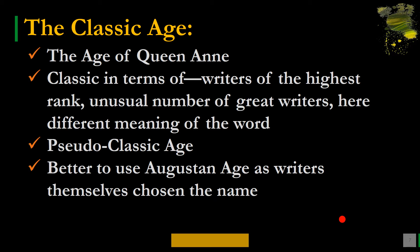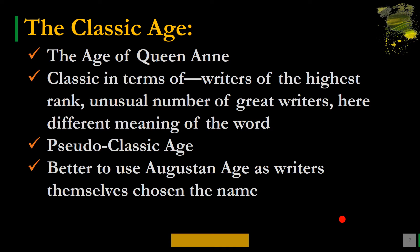There are three basic features of the Classic Age: first, writers of the highest rank; second, an unusual number of great writers flourishing in the period; and different forms emerge. For example, the Augustan Age in Roman literature is considered its Classical Age, and the reign of Louis XIV is considered the Classical Age of French literature. When we use the term 'Classical Age' for 18th century English literature, we must recognize we are using it with a different meaning.